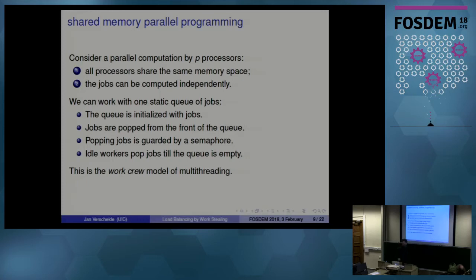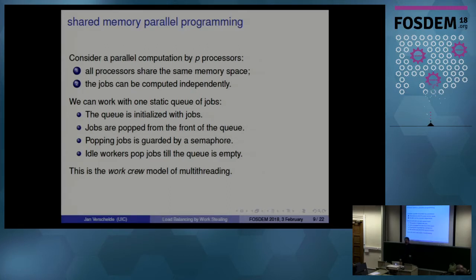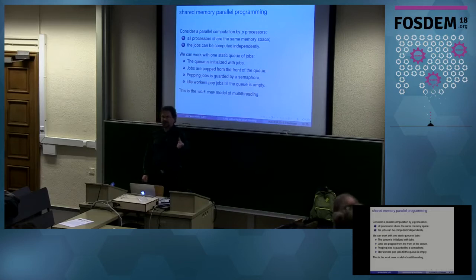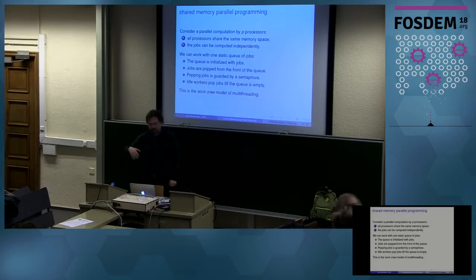So how do you code this up? You all have a parallel computer — they don't make serial computers anymore, so you all have multiple cores and they all have access to the memory. In the work crew model, we initialize a queue of jobs. In the previous example I had 11 jobs, so there's a queue of 11 items. The items are the beginnings of the permutations. The queue data structure has a semaphore, so when a task is idle it looks for the next job, requests the semaphore, waits if it's occupied, and once it has the semaphore it takes the job, increments the job counter, and continues computing.